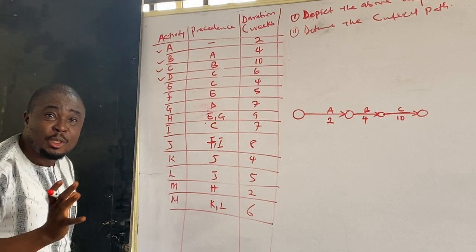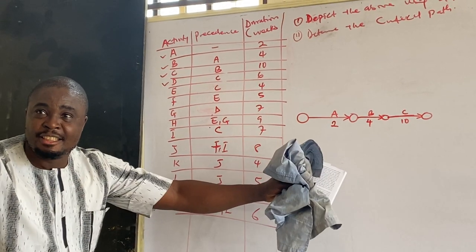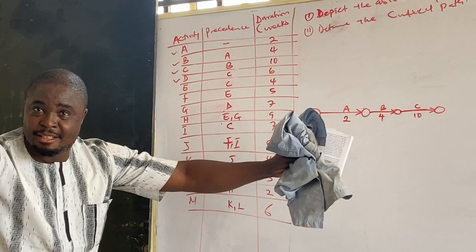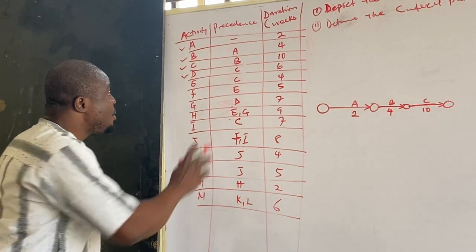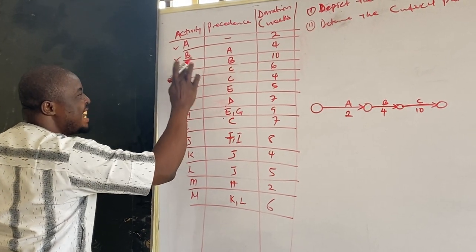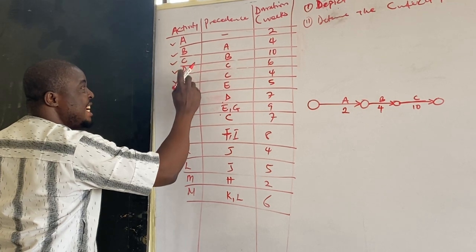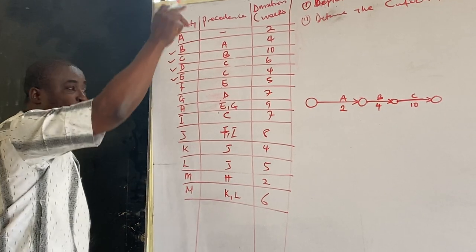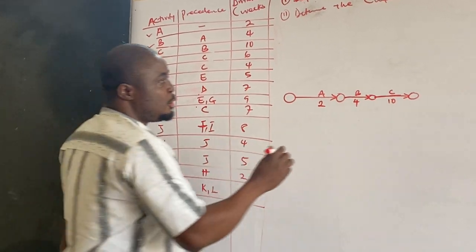That means C on its own is a burst activity. C will lead to two things. Since C will lead to two things, they are D and E. We are going to do D and E at the same time. And D must come before E. So you do it this way.